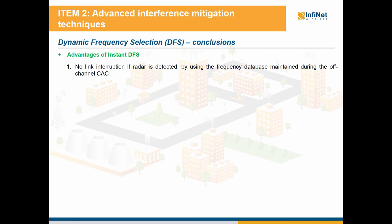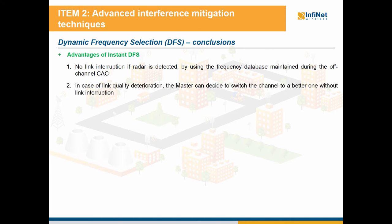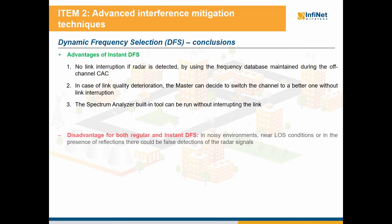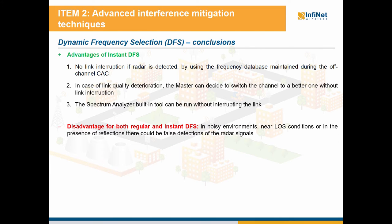The advantages of IDFS are the following: there is no link interruption if radar is detected, by using the frequency database maintained during the off-channel CAC. In case of link quality deterioration, the master can decide to switch the channel to a better one without link interruption. A spectrum analyzer built-in tool can be run without interrupting the link as well. The disadvantage is that in noisy environments, near loss conditions, or in the presence of reflections, there could be false detections of the radar signals.